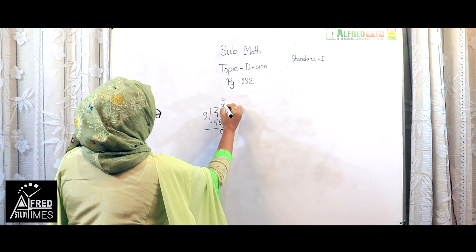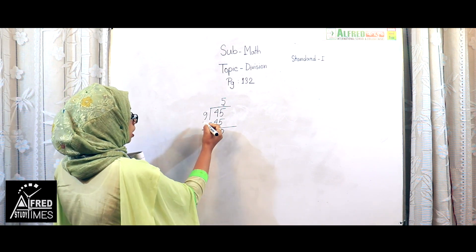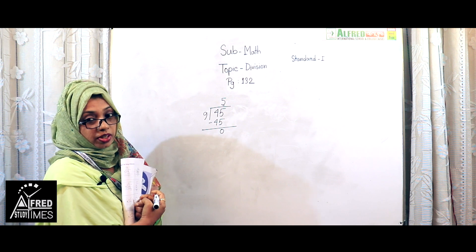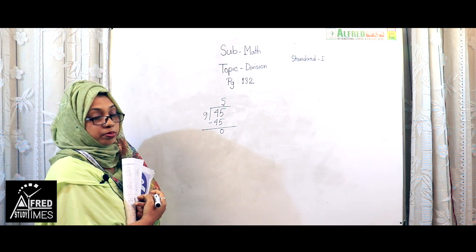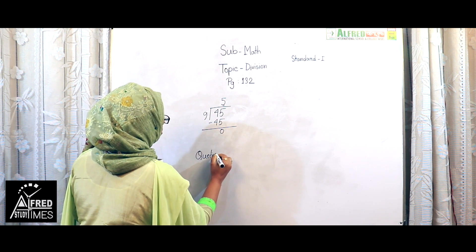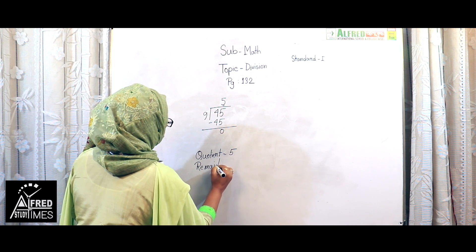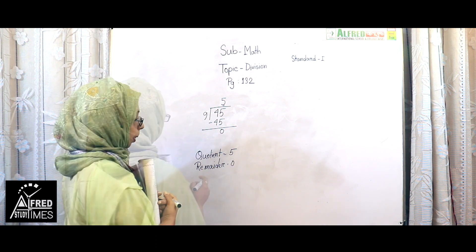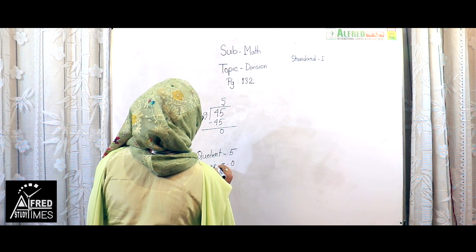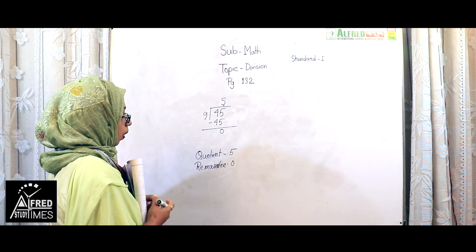The answer is 5 — this is called the quotient. The quotient is written at the top. Okay, so in this math: dividend is 45, divided by 9. The quotient is 5, so we write quotient 5. And the remainder is 0.